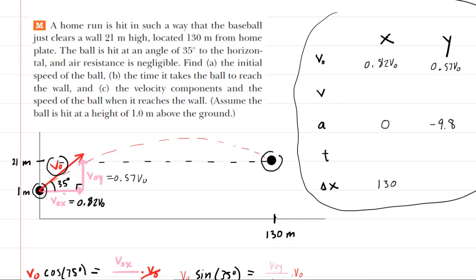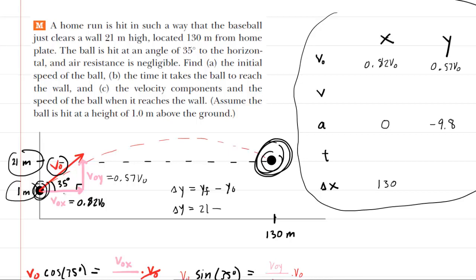In the y-direction, we have to be careful. Delta-y equals the final y-coordinate minus the initial y-coordinate. Looking at our picture, the final y-coordinate is 21 meters and the initial y-coordinate is 1 meter. So the displacement in the y-direction is 21 minus 1, giving us delta-y of 20 meters. Make sure to use 20 here.